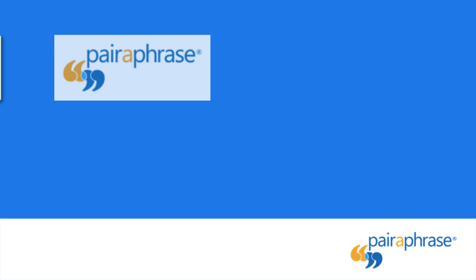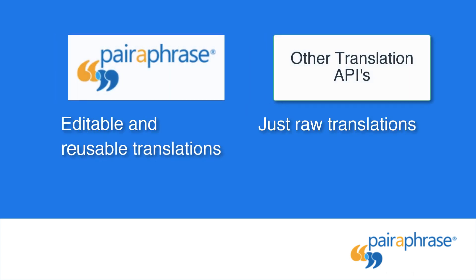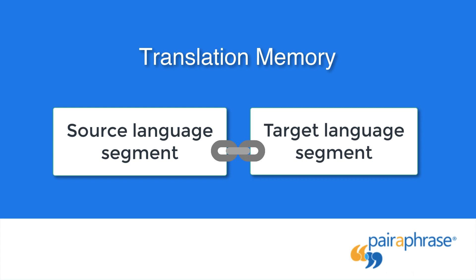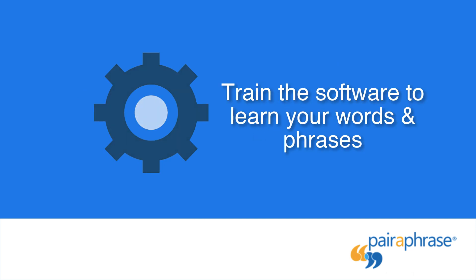Paraphrase is also different from most translation APIs because it facilitates reusable translations. When you save your edits in Paraphrase, your translated words and phrases are stored as segments of text in a bilingual essential repository called a translation memory. Unlike many translation APIs, Paraphrase uses dynamic machine learning, which is a form of artificial intelligence. Artificial intelligence and translation memory allows Paraphrase the ability to learn your words and phrases.